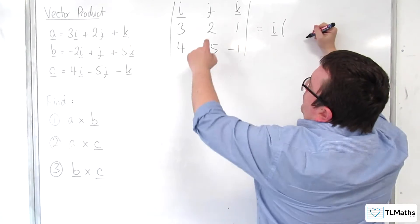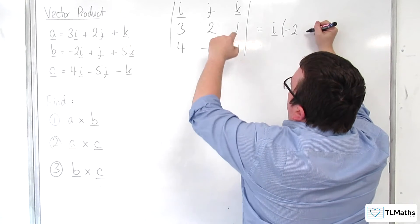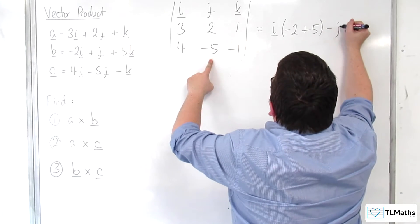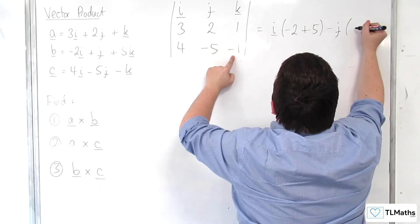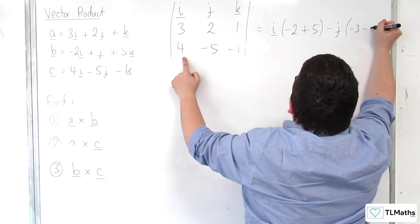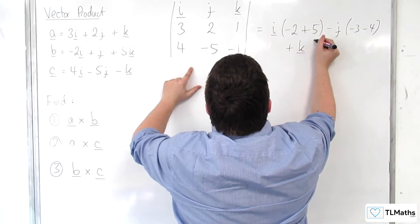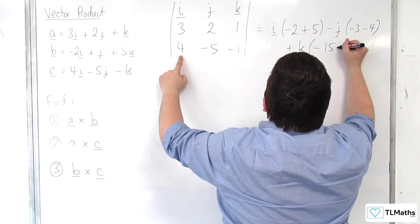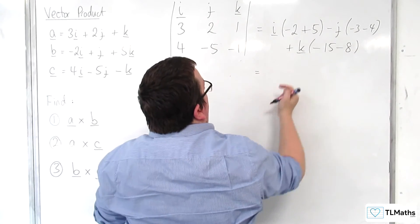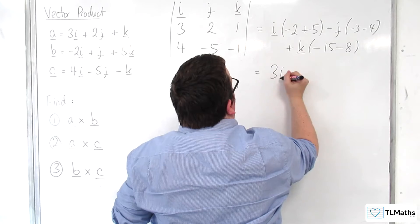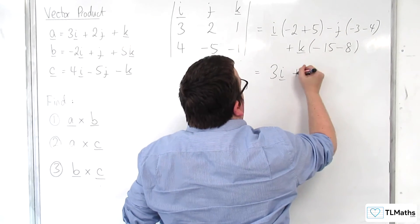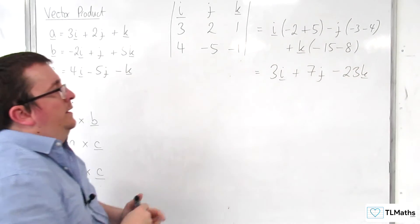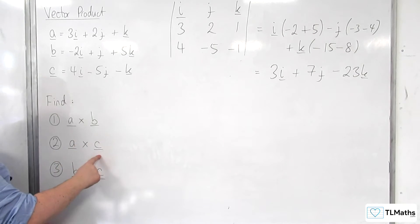So for I, we've got 2 times minus 1, so minus 2, take away 1 times minus 5, so plus 5. Then take away J times 3 times minus 1, so minus 3, take away 1 times 4, so take away 4. Plus K times 3 times minus 5, so minus 15, then take away 2 times 4, so take away 8. So we have 3I, then minus 7 so plus 7J, and then minus 23K. And so that is A cross C.